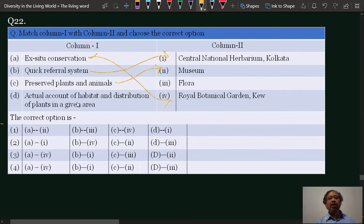And D, the actual account of habitat and distribution of plants in a given area - flora of an area. Flora may be flora of one district, maybe one subdivision, maybe one state, or flora of India.